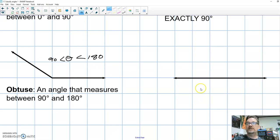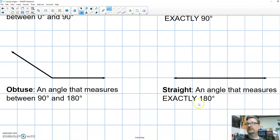And then our last angle is this straight line. Yes, this is an angle and this angle measures exactly 180 degrees.